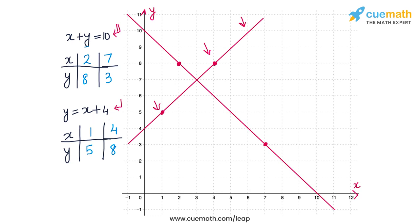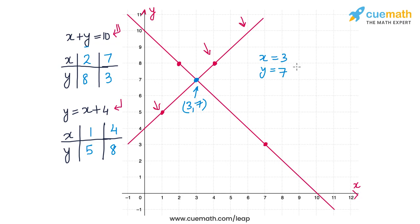We can see that these two lines intersect at the point (3,7). This point represents the solution of this pair of equations. The coordinates give us x equal to 3 and y equal to 7, which means the number of boys is 3 and the number of girls is 7 who participated in the quiz. That completes part 1 of this question.